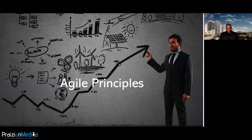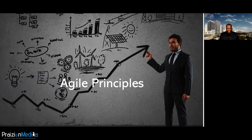Let's cover the 12 principles rapidly. Number one: our highest priority is to satisfy the customer through early and continuous delivery of valuable software. Number two: welcome changing requirements even late in development. Three: deliver working software frequently. Four: business people and developers must work together daily. Five: build projects around motivated individuals — give them the environment and support they need and trust them to get the job done. Six: the most efficient and effective method of conveying information to and within a development team is face-to-face conversation. Seven: working software is the primary measure of progress. Eight: agile processes promote sustainable development — note the phrase 'constant pace indefinitely.'